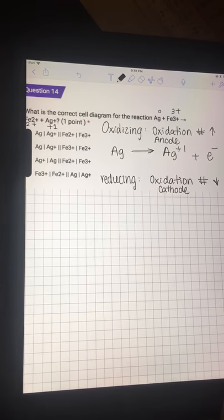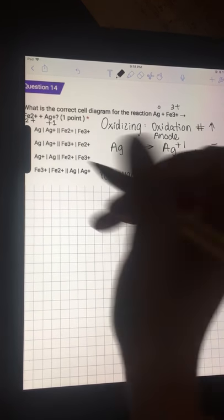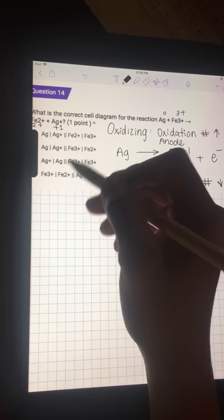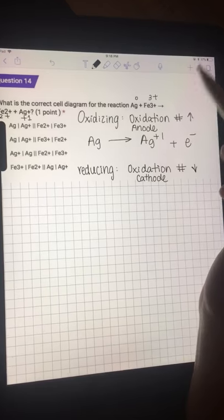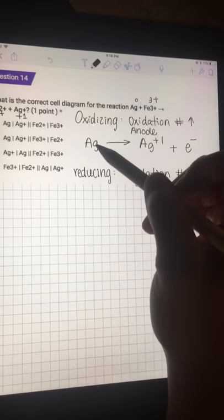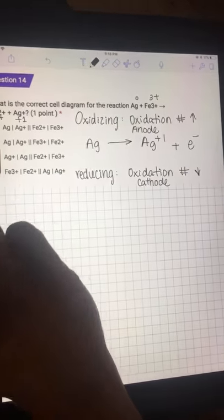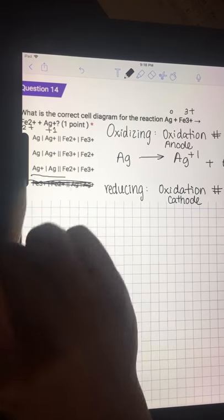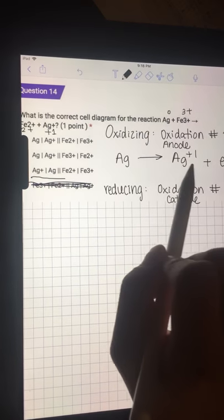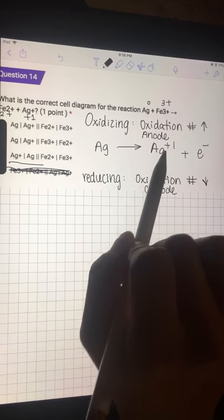Now we put two slashes in the middle to separate the anode and cathode. First is the anode, so we look for the Ag. These three will apply, not this one: Ag and Ag+. These two apply; this one doesn't.